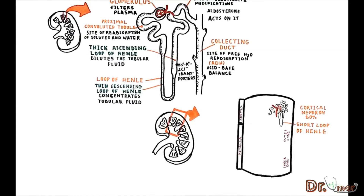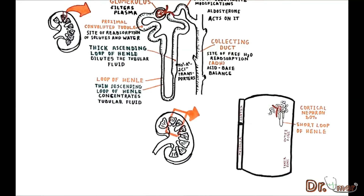In the cortex, the proximal and distal tubules, as well as the initial segment of the collecting duct, are surrounded by a capillary network, and the interstitium is approximately 300 mOsm per kg, close to an isotonic environment.